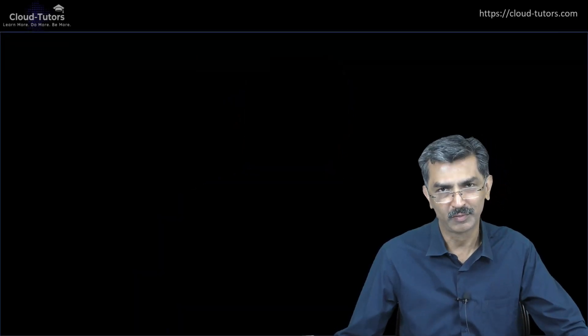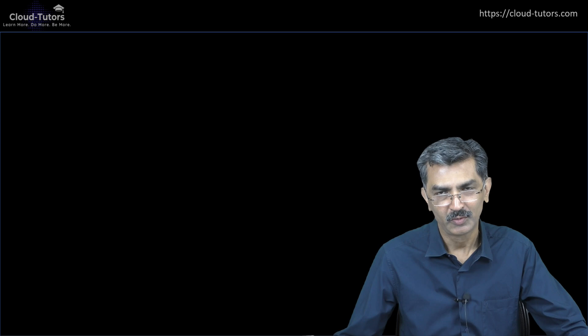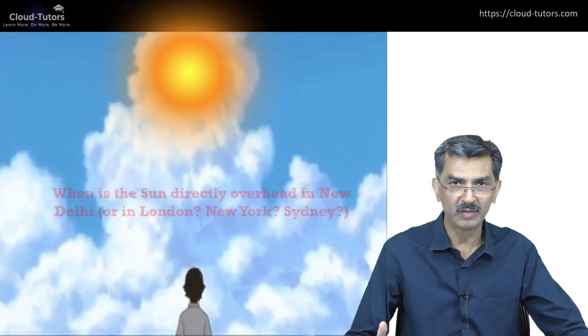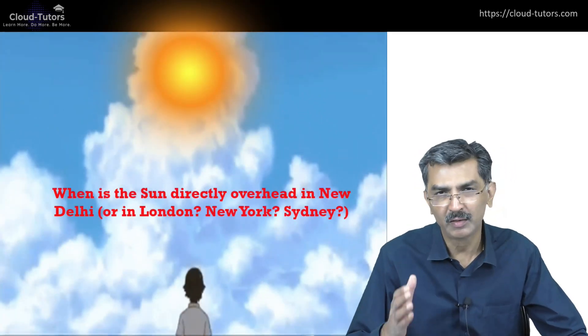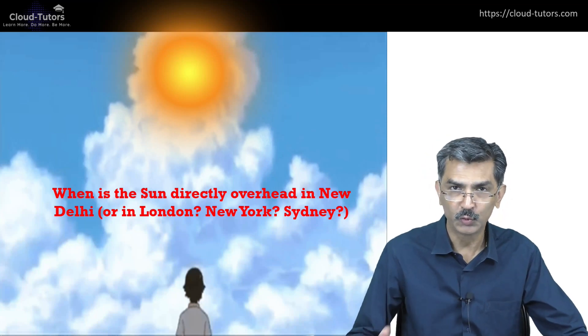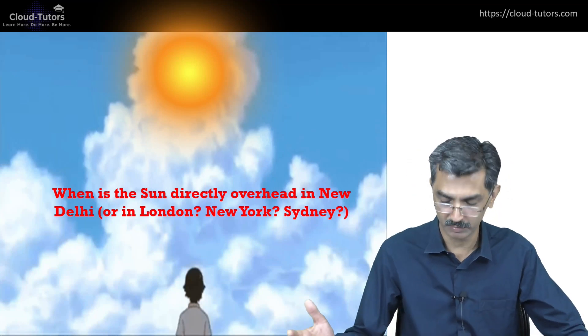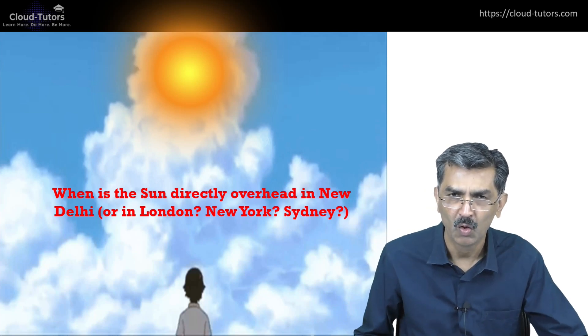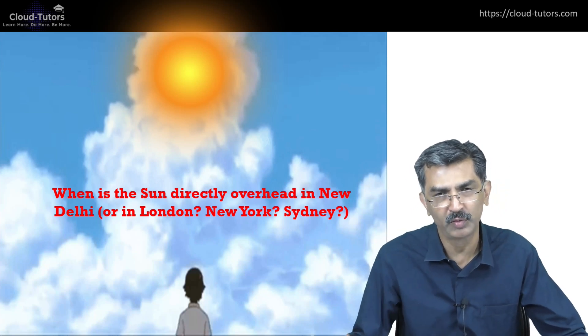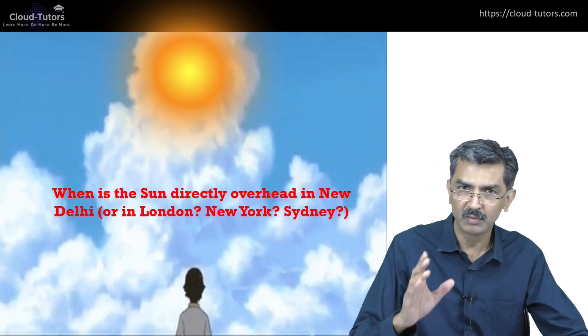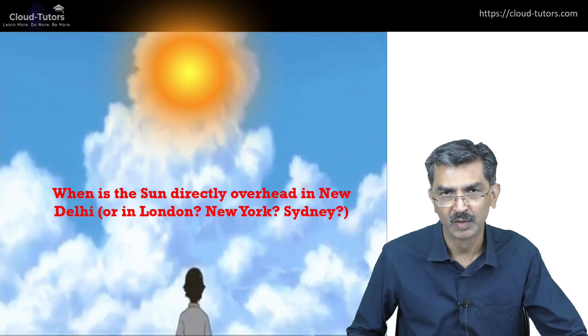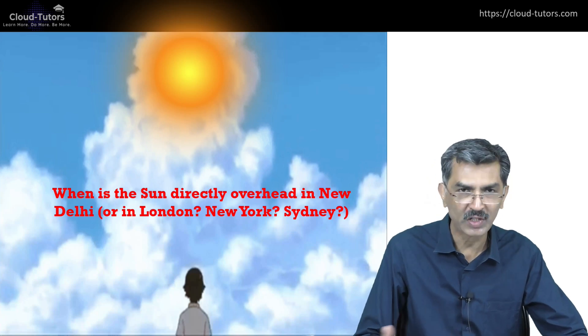Welcome back to this video in our 'Stem the Confusion' series. Today's question is: when during the year is the Sun directly overhead in New Delhi, London, New York, Sydney, or any other city you want to consider? When is the Sun really directly overhead — meaning you cast no shadow?